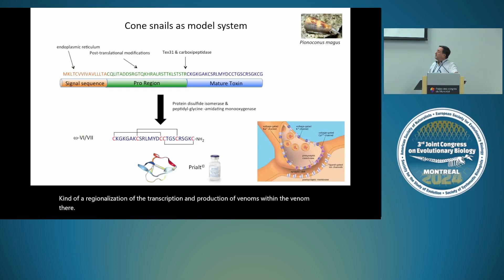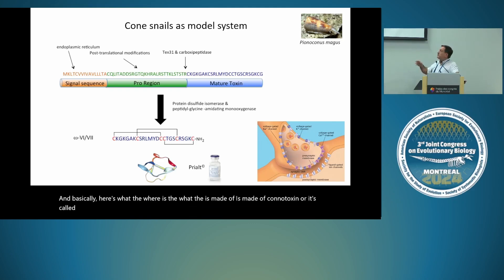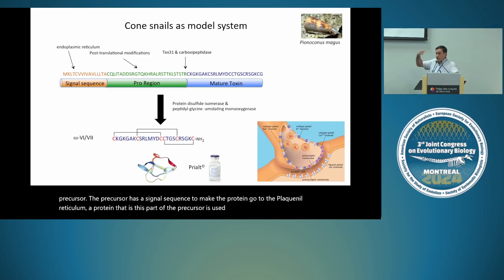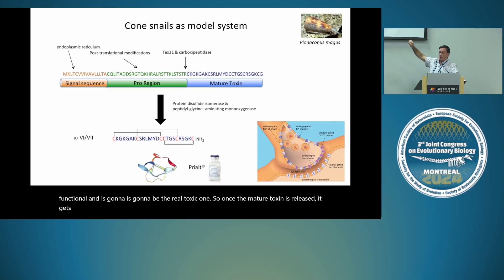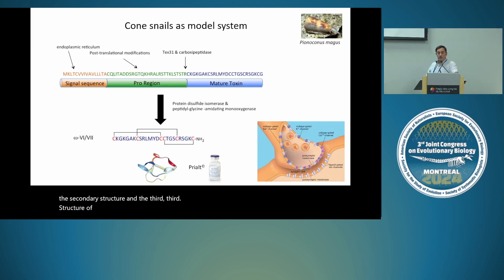The venom of cone snails is made of conotoxins — small peptides synthesized as a precursor. The precursor has a signal sequence to direct the protein to the endoplasmic reticulum, a pro-region used for processing, and then the mature toxin which is the functional toxic component. The mature toxin is highly variable with a fast evolutionary rate, but it maintains disulfide bonds that form the secondary and tertiary structure of the conotoxin.